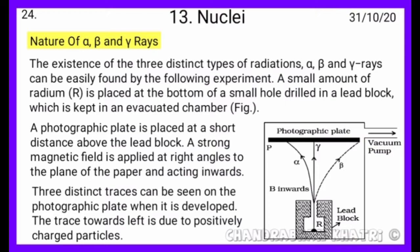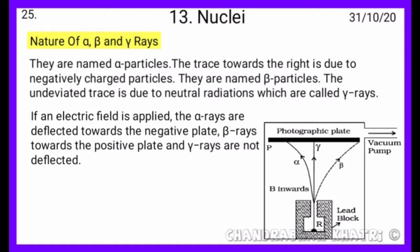A strong magnetic field is applied at right angles to the plane of the paper and acting inwards. Three distinct traces can be seen on the photographic plate when it is developed. The trace towards the left is due to positively charged particles, named alpha particles. The trace towards the right is due to negatively charged particles, named beta particles. The undeviated trace is due to neutral radiations, which are called gamma rays.